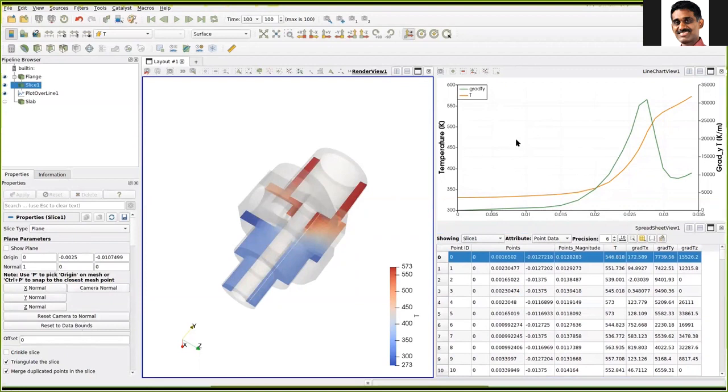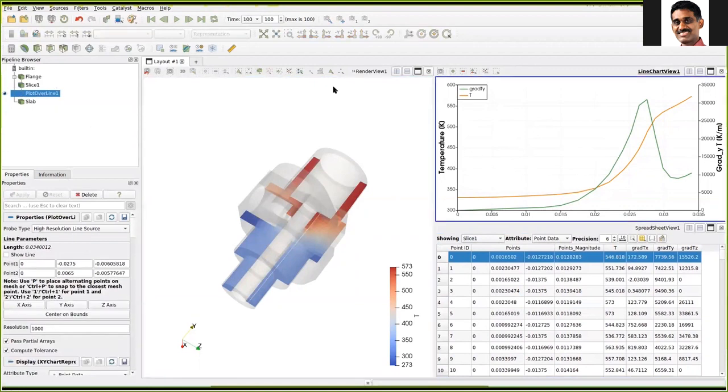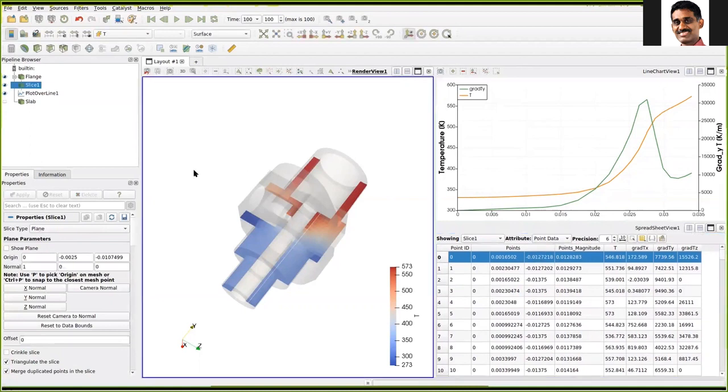When the viewport is active, there are three items in this pipeline browser that are in visible state. This is an eye icon. If it is open, it means that the data corresponding to this item is displayed in the viewport.